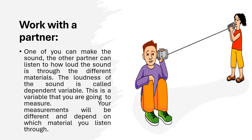This is an activity where you can work with a partner. One of you can make a sound; the other partner can listen to how loud the sound is through different materials. The loudness of the sound is called the dependent variable — this is a variable that you are going to measure. It's called dependent variable because the sound loudness depends on the materials. Your measurements will be different and depend on which material you listen through.